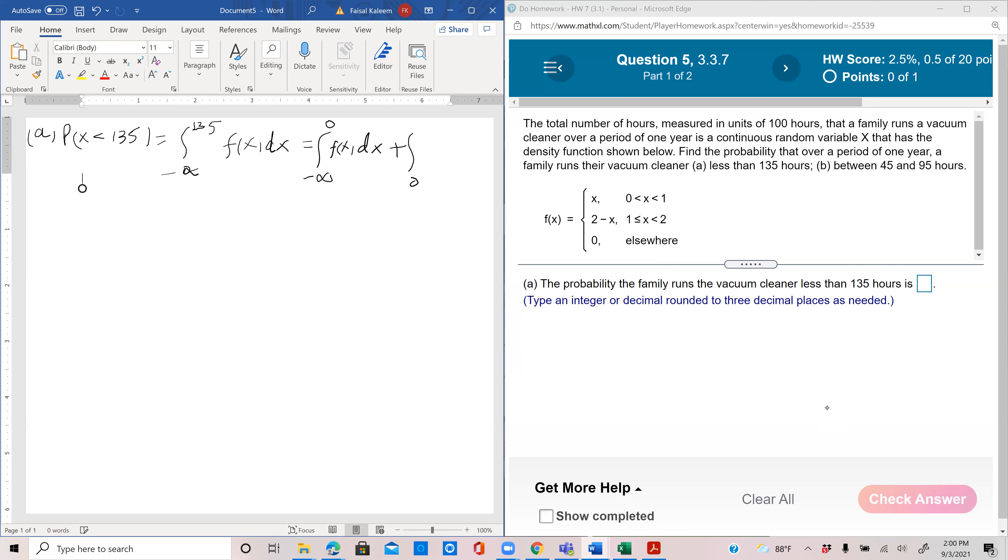Plus 0 to—one thing which we can do is we can either change, because we know that this is actually 0 to 100 and this is 100 to 200, so we can just do that. Just think of this 1 as 100 and this 2 as 200. Similarly here, 1 is 100, so 0 to 135, fx dx.